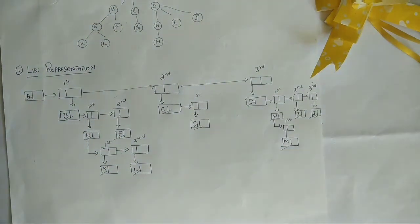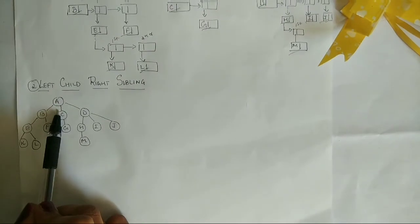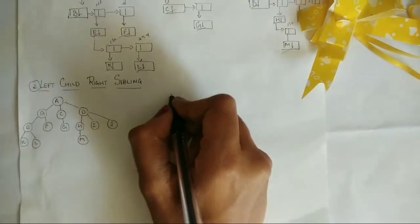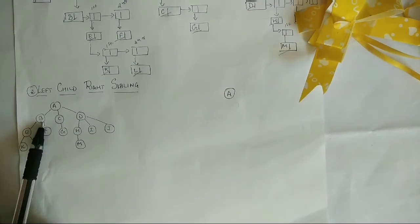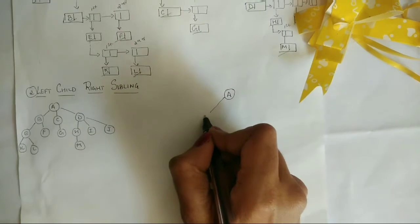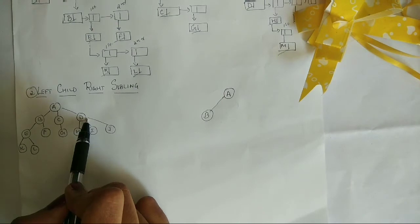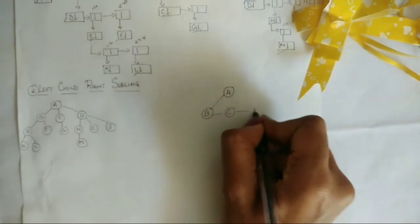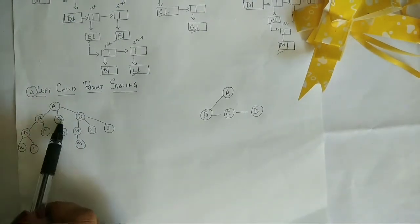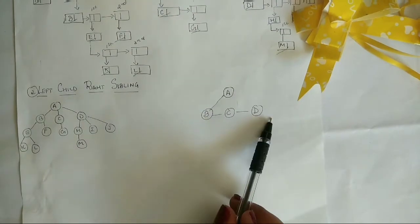Now let's move on to left child right sibling representation. Consider the same tree. A is the root node. The child will be situated in the leftmost position, so the child node of A is B. Then for right sibling, the siblings of node B are C and D — connect and place them to the right of B and C respectively. So B is the child of A, and we represent it as left child and then the right siblings.